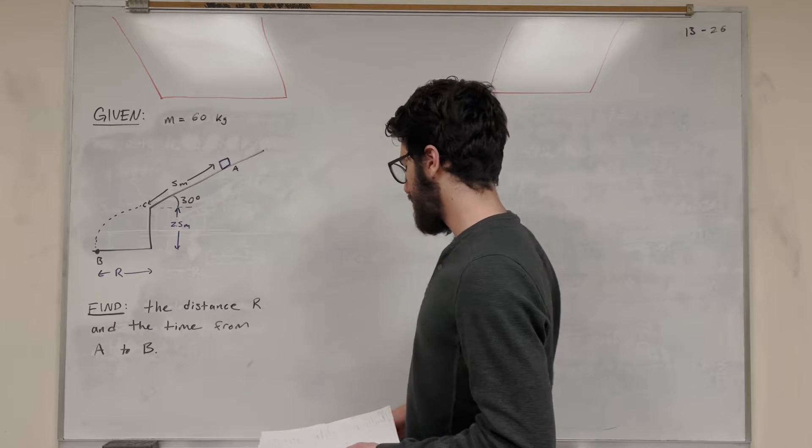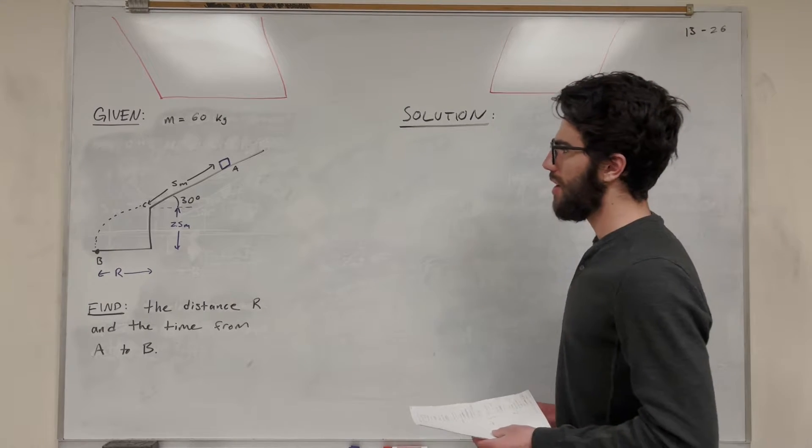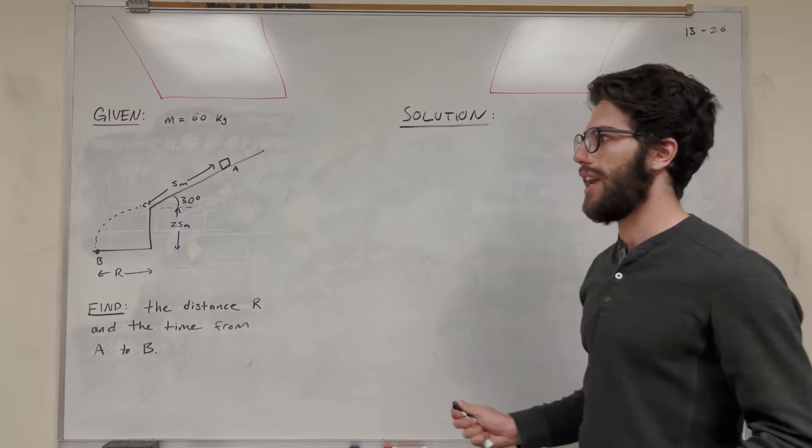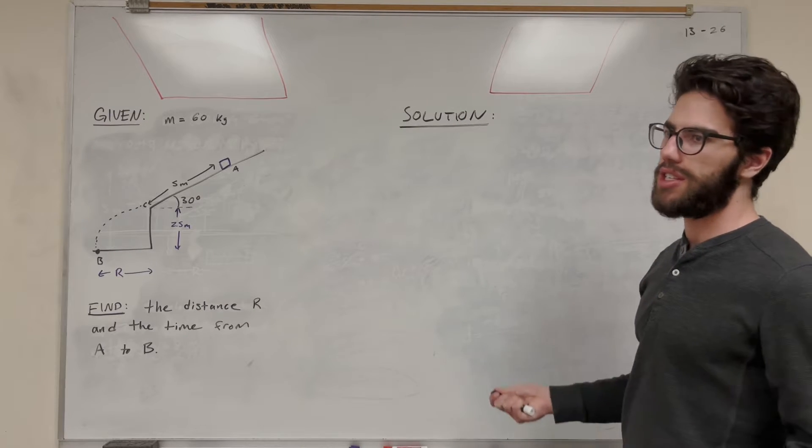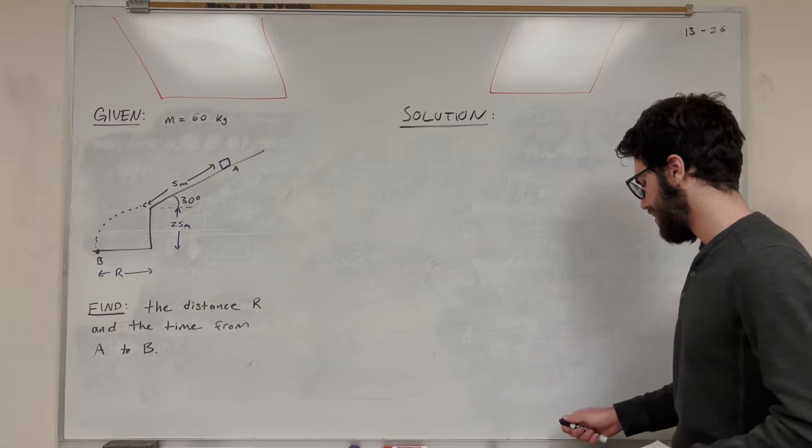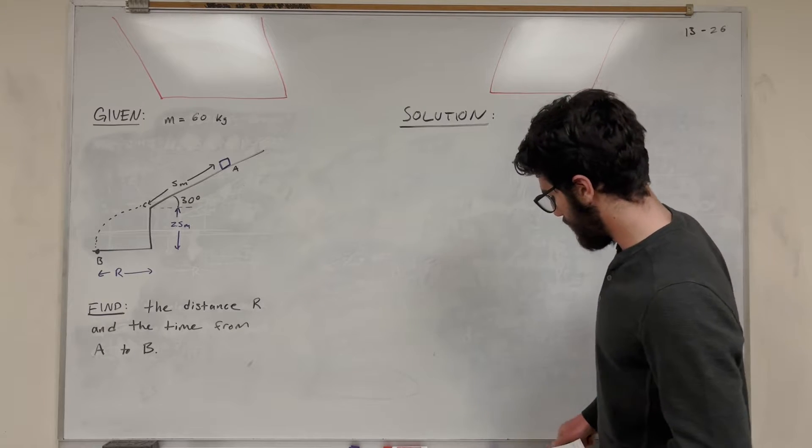So how are we going to do that? Let's start with the force body diagram. If we can find the acceleration of the block down the ramp, we can find how long it takes to go down the ramp, we can find the velocity at the end of the ramp. So yes, we're going to want a force body diagram.